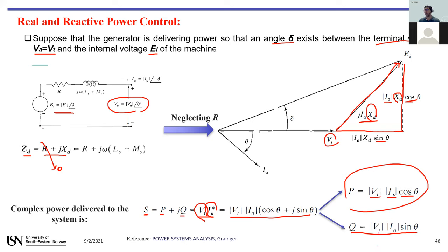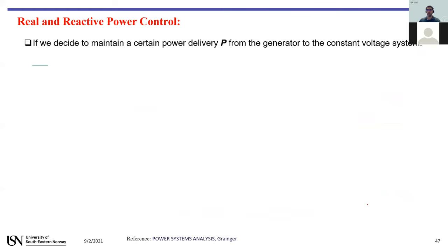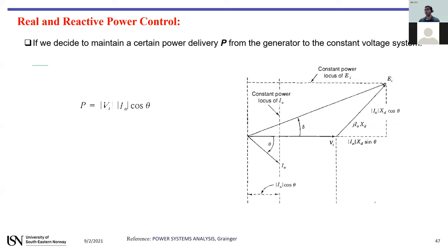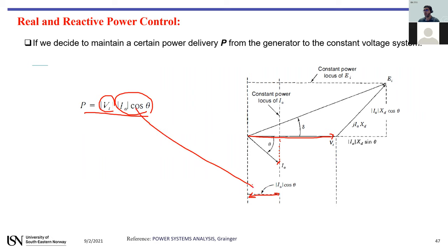The reactive power is |Vt| × |Ia| × sin(theta). Remember these two expressions for active and reactive power. If you want to control reactive power while keeping active power constant, since the machine is connected to an infinite bus the terminal voltage is constant. We need to keep the projection of current on the terminal voltage — the term I×cos(theta) — constant.